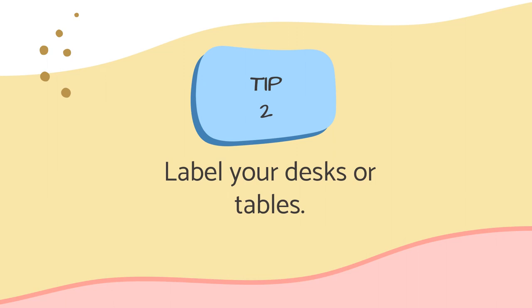Tip number two: Label your desks or tables. Labeling is a useful tool — you can use labels to create groups or call students to line up. I have used numbers, colors, and letters at various points in my career. You can label individual desks or label groups: group one, group two, red group, blue group, birds, ladybugs, etc. Be as creative as you like with any type of label you wish.